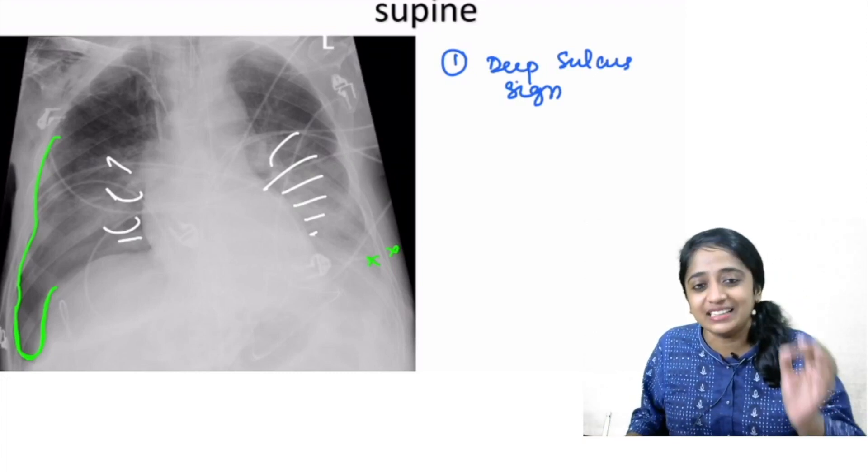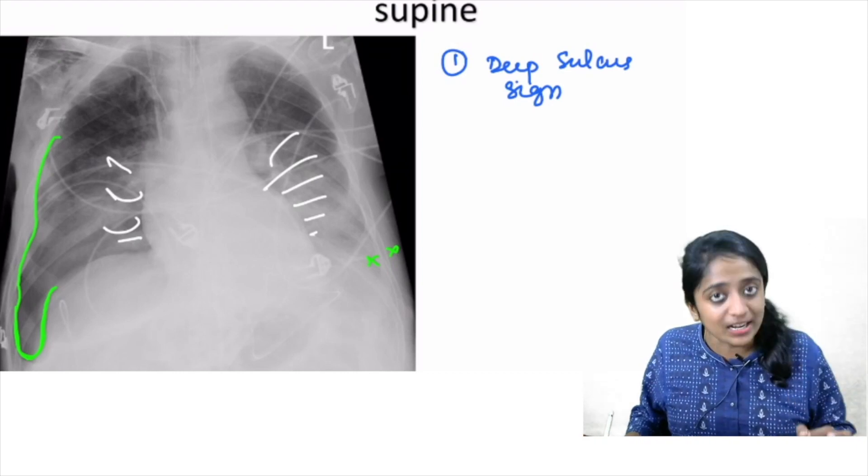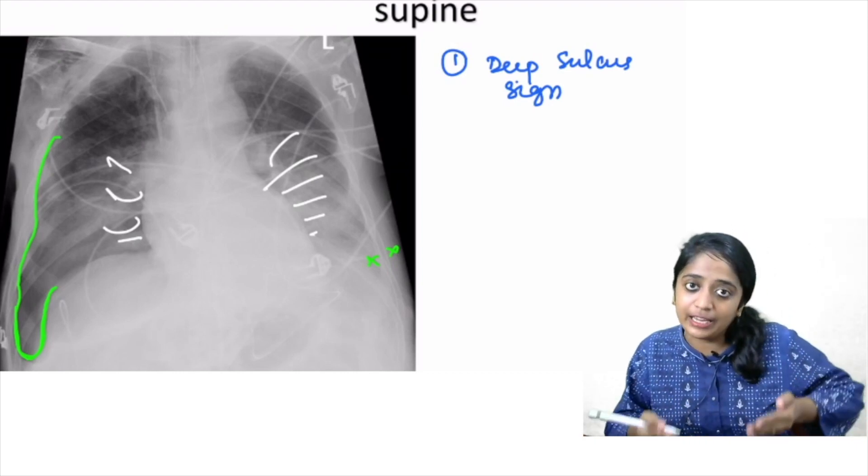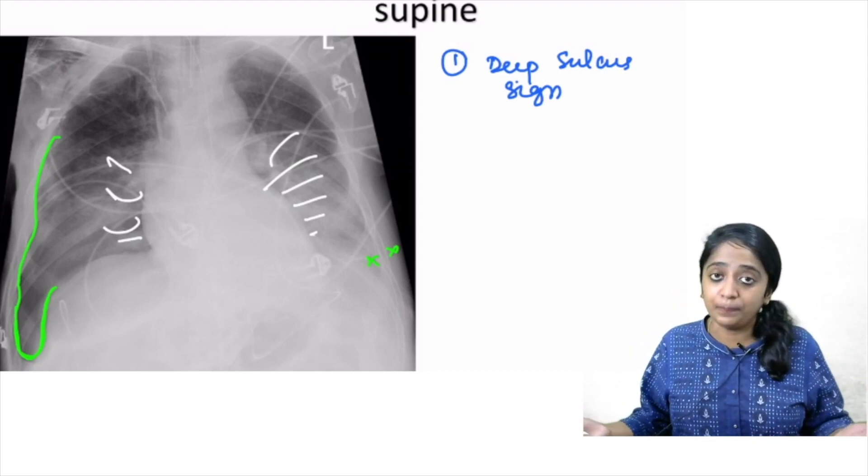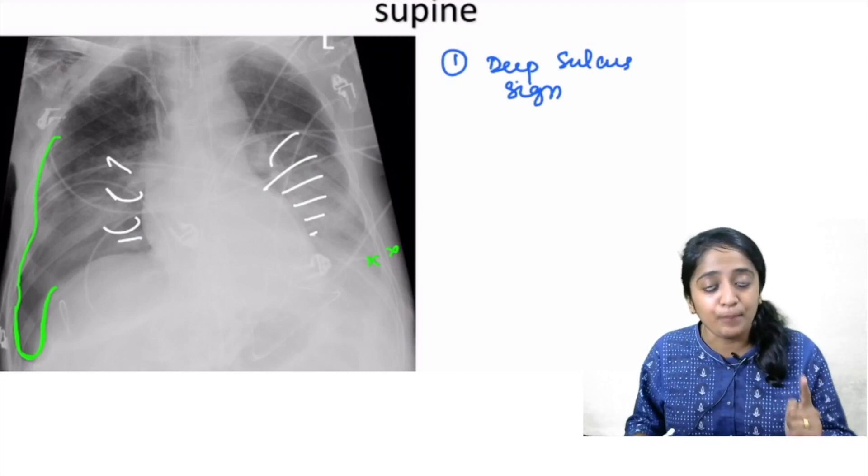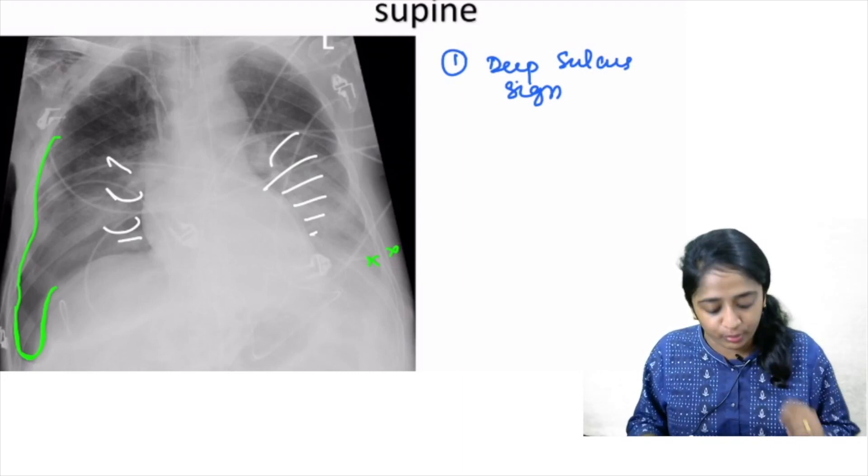So what does it represent? It represents the air collected within the pleural cavity, where specifically between the costophrenic angle, anterior and inferiorly. When the patient is lying supine, that is the non-dependent area. So deep sulcus sign is an important sign of pneumothorax on supine radiograph.